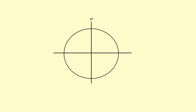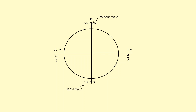In physics, we use angles to represent cycles, waves, and other oscillations. We've got 0 degrees, then 90 degrees which is pi over 2 radians, then 180 degrees which is pi radians, then 270 degrees which is 3 pi over 2 radians, and 360 which is 2 pi radians. So 360 represents a whole cycle, and 180 will represent half a cycle, and so on.